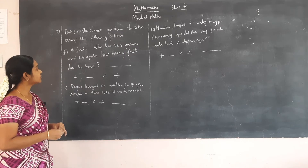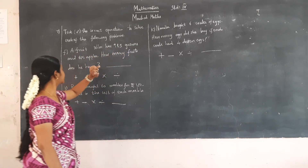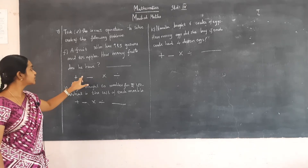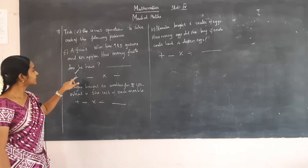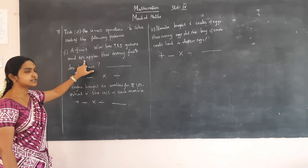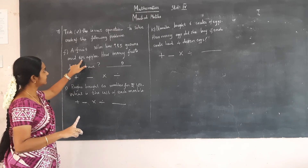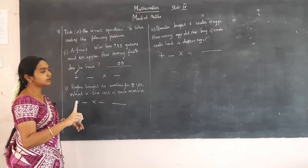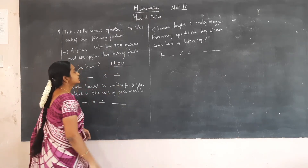The 7th question: tick the correct operation to solve each of the following problems. A fruit seller has 985 guavas and 615 apples. How many fruits does he have? We need to find the total number of fruits, so we have to add. The correct operation is addition. 985 plus 615: 5 plus 5 is 10, carry 1; 8 plus 1 plus 1 is 10, carry 1; 9 plus 6 plus 1 is 16. So the total number of fruits is 1600.